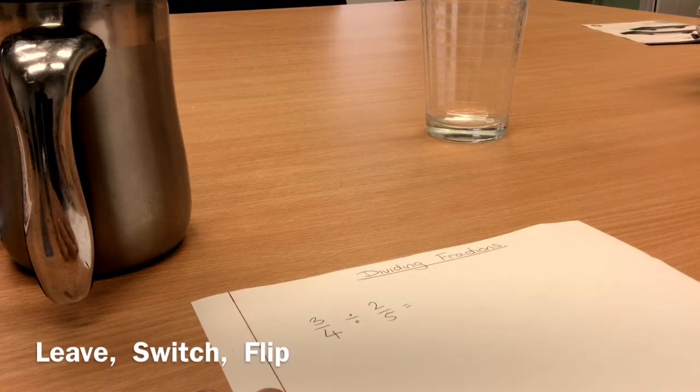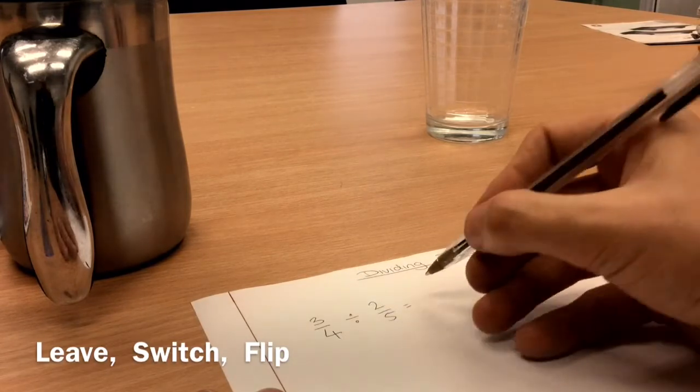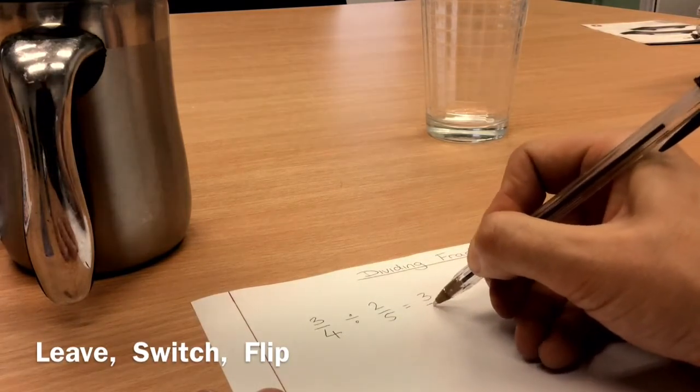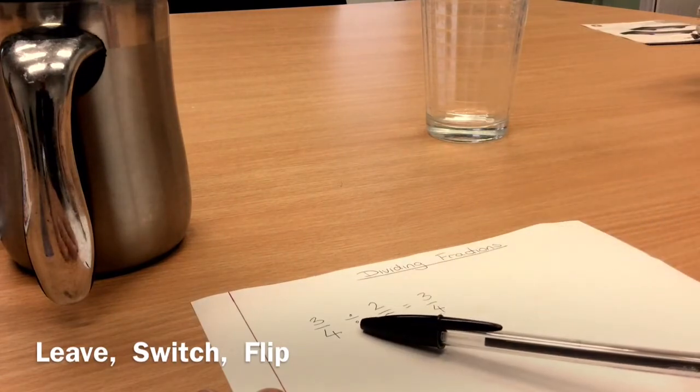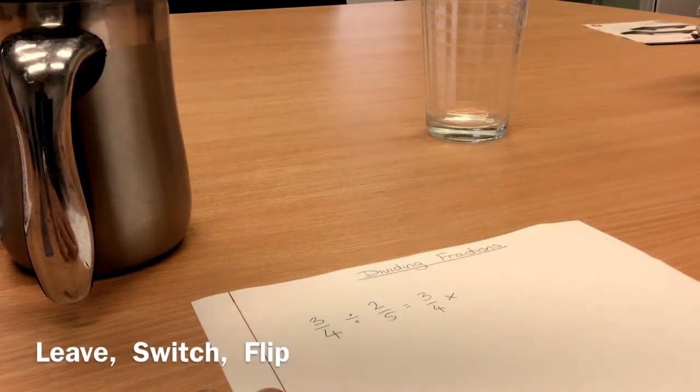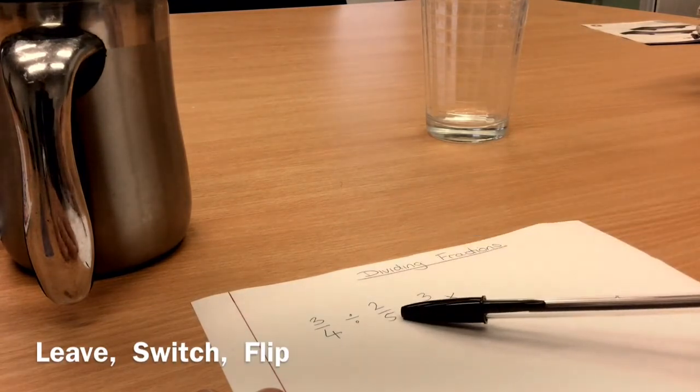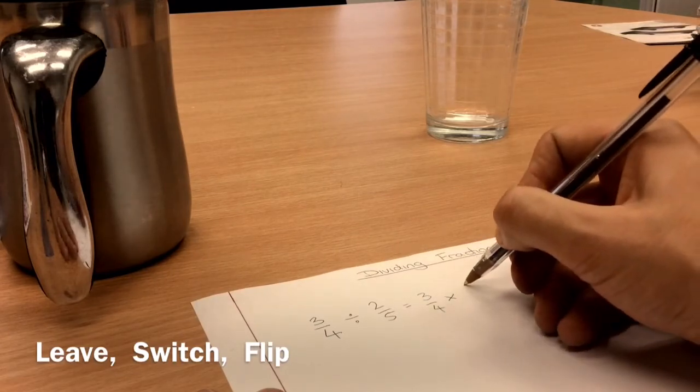The three stages are leave, switch, flip. Leave, switch, flip. So I look at my first fraction, three quarters, and I leave it. I leave it alone. I take my divide, and I switch it into a multiply, and I flip the last fraction. What do I mean by flip? I mean turn it upside down.